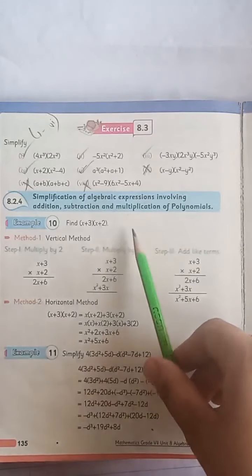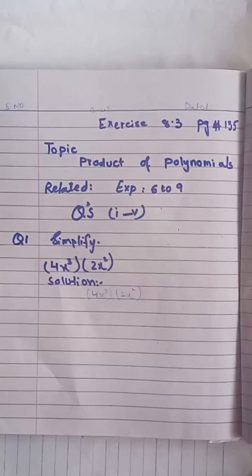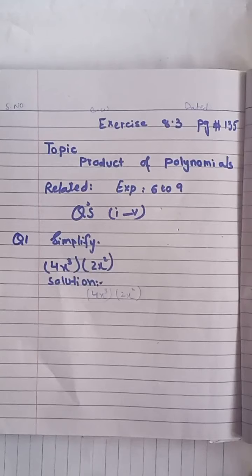Now we will do this in our new copies. First look at exercise 8.3, page number 135. The topic is product of polynomials and the related examples are 6 to 9. Questions are 1, 2, and 5. We will do these in our own copies. Okay students, first question — simplify.